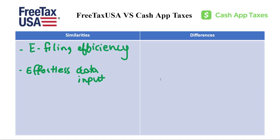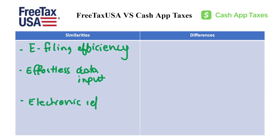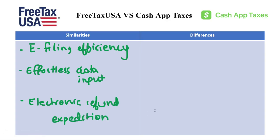This saves you time and reduces errors. The next similarity is electronic refund expeditions. If you want your tax refund deposited quickly and securely, both platforms allow you to choose direct deposit as your preferred refund method. This eliminates the wait time for traditional mail.